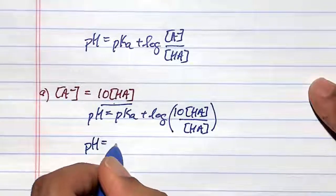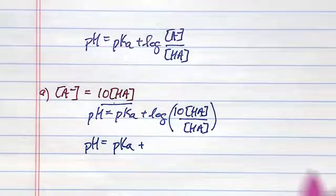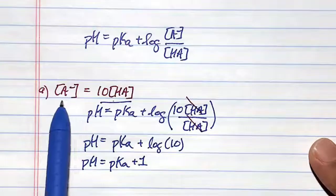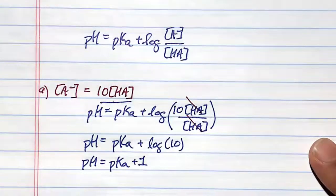I have a situation here where pH is equal to pKa, the HA's cancel, plus log of 10. You have 10 times the amount of A- over HA, your pH only changes by one unit.